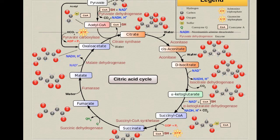When a cell has problems with energy — like when we have a stroke or when we don't have oxygen in the tissue for some reason — the first neurotransmitters that are going to suffer modifications in their metabolism are of course glutamate and GABA, because of this participation in the Krebs cycle.